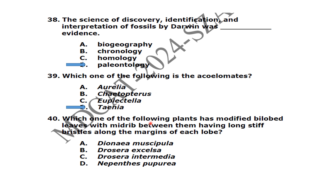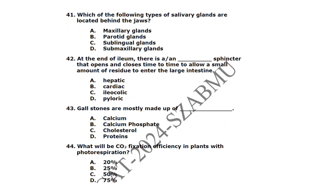Which one of the following is an acoelomate? The answer is acoelomate organisms. Which one of the following plants has modified leaves with midribs having long stiff bristles along the margins of each lobe? It is Dionaea muscipula (Venus flytrap).